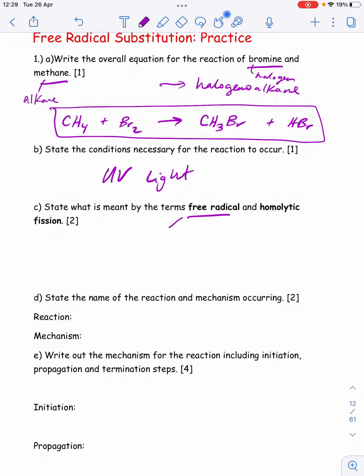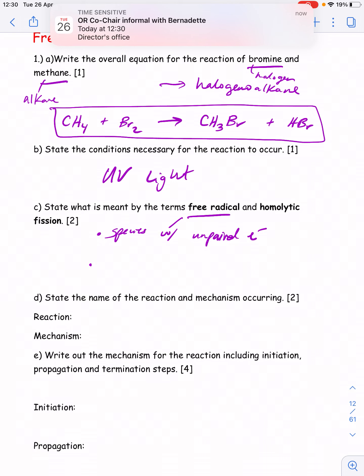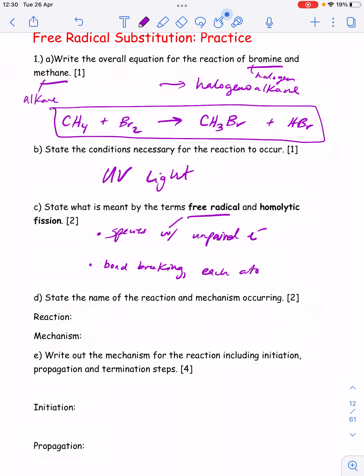A free radical is a species with an unpaired electron, and homolytic fission is what happens in the initiation step of this mechanism, which is when a bond splits and both atoms come away with one electron. So bond breaking, each atom gets one electron from the bond pair. The name of the reaction is substitution and the mechanism type is free radical. So altogether we refer to this reaction as free radical substitution.